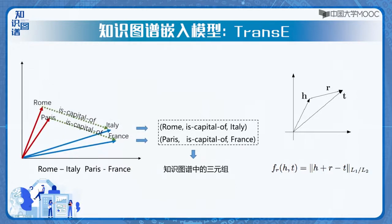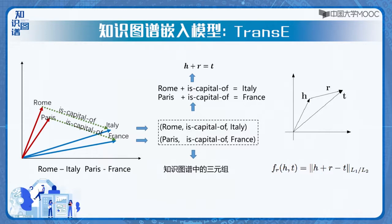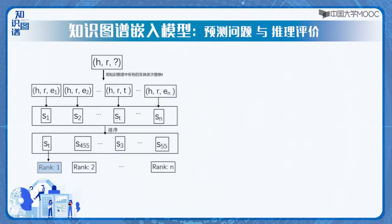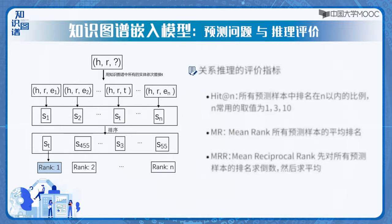有了这些向量表示，就可以非常方便地完成推理计算。例如，假如我们希望推断Rome和Italy是否存在Is Capital of的关系，只需要把三个向量做加减法计算即可。我们可能还希望推断罗马和欧洲的关系，罗马和凯撒大帝的关系等等。怎样评价推理结果的好坏呢？一般的做法是选择一组待测试的三元组，对每一个三元组用知识图谱中的其他实体替换H或T，然后对所有的候选三元组计算得分并排序。